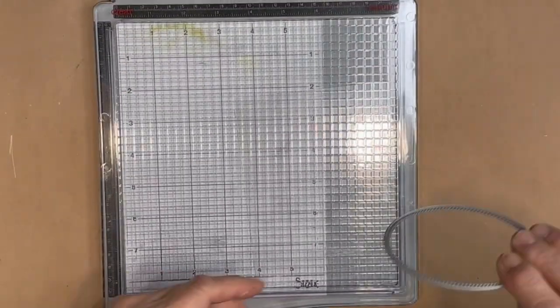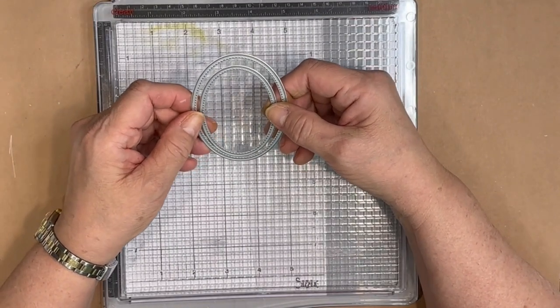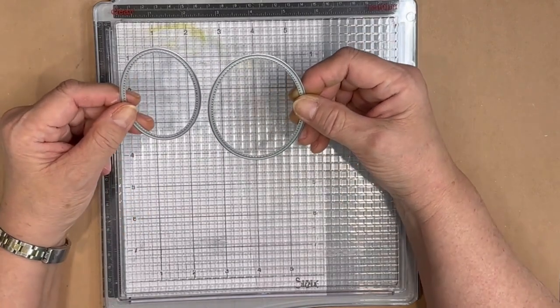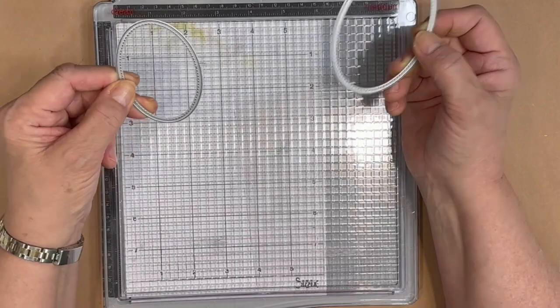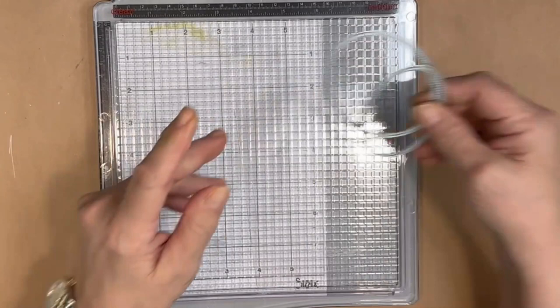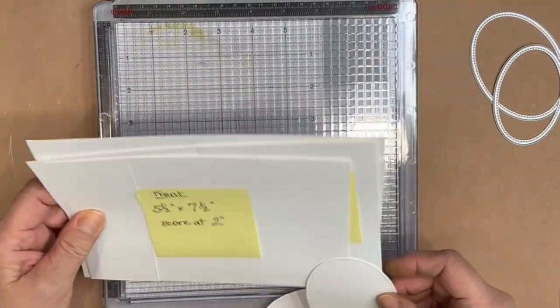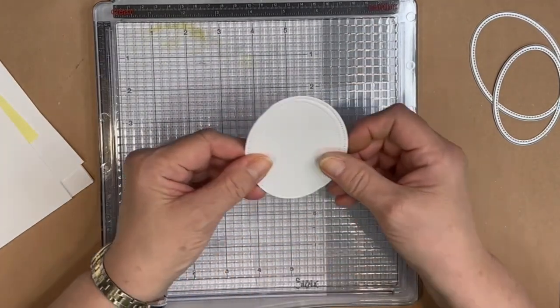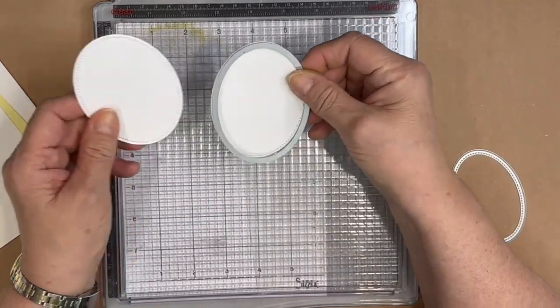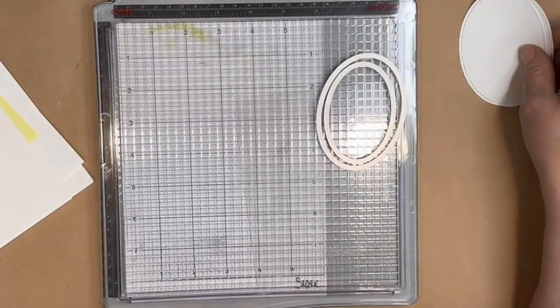I will be using two dies. These both come from a Gina K set called Stitched Ovals. The larger one is 2 5⁄8 inches, and the smaller one is 2 1⁄2 inches right across the center. As far as paper goes, I have my cardstock here, and with scrap pieces of cardstock I cut out two ovals using the larger of the two dies.